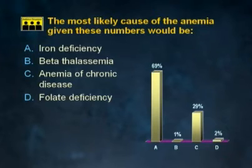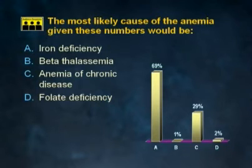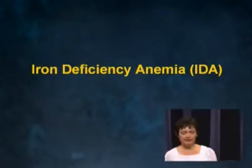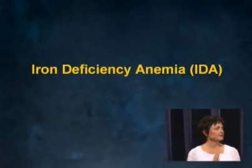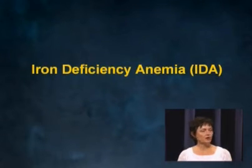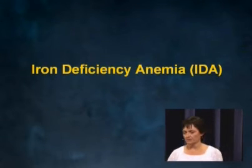Not many people thought it was beta thalassemia or folate deficiency. It came down to anemia of chronic disease versus iron deficiency, and the majority picked iron deficiency — and indeed, this is iron deficiency. We'll go over all these numbers as we go.